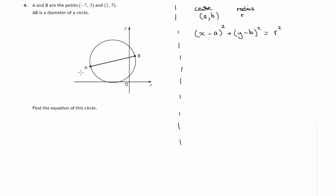So what are we given? We're given the endpoints of this diameter (-7,3) and (1,5). Now to find the center, it'll be the midpoint of that diameter ab.